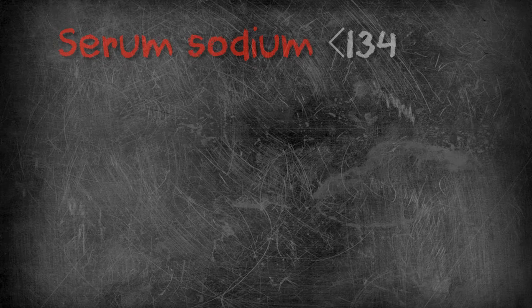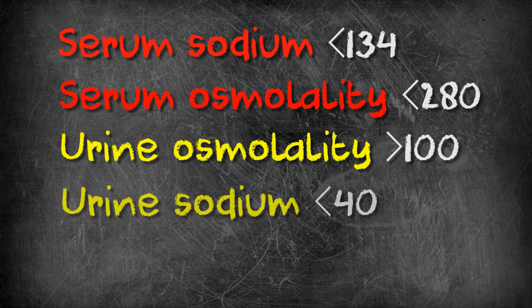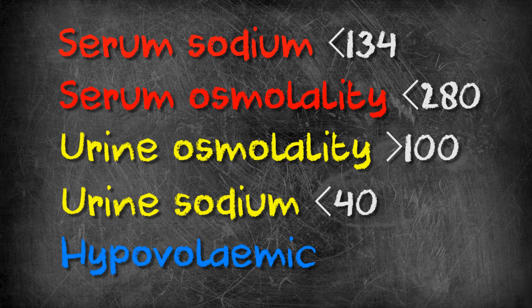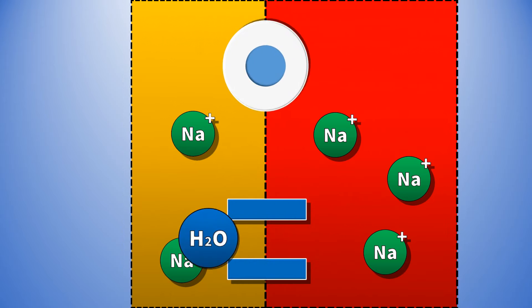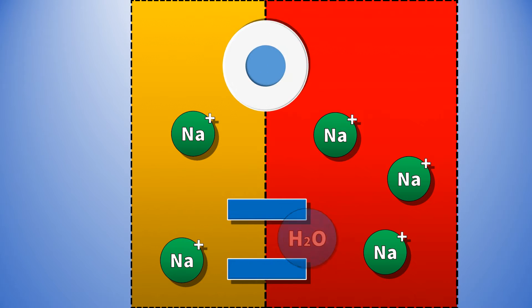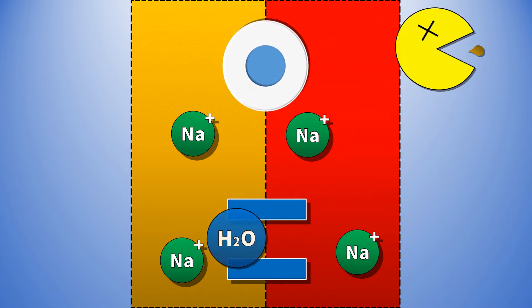To recap, you've got a patient with hyponatremia — low sodium — with a low serum osmolality and high urine osmolality. Urine sodium is also low, and the patient appears hypovolemic, dehydrated. Concentrated urine with a low sodium content suggests that both the co-transporter and ADH are working overtime to suck salt and water out of the urine. This is a normal response to dehydration caused by things like vomiting or excessive sweating. Remember, bodily fluids like intestinal secretions or sweat are not pure water — you'll lose electrolytes like sodium as well, leading to a hyponatremia.